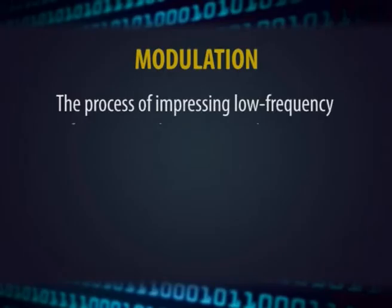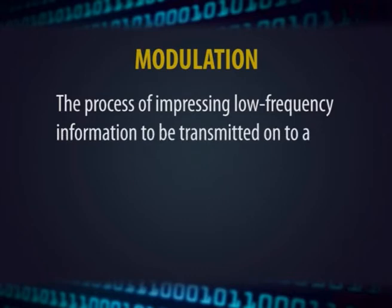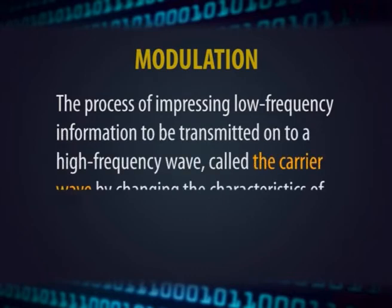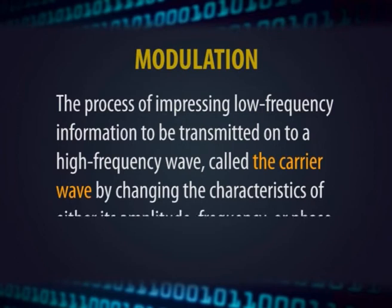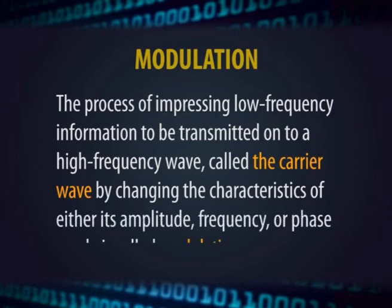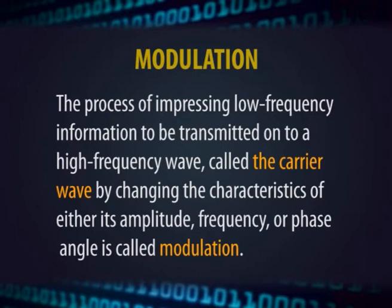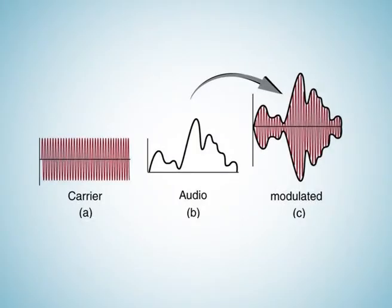The process of impressing low-frequency information onto a high-frequency wave called the carrier wave — by changing the characteristics of either its amplitude, frequency, or phase angle — is called modulation. The main function of the carrier wave is to carry the audio or video signal from the transmitter to the receiver. The wave that results from the superimposition of the audio signal and carrier wave is called the modulated wave.